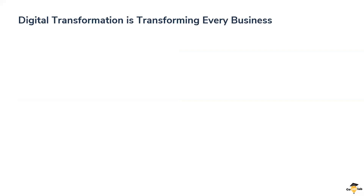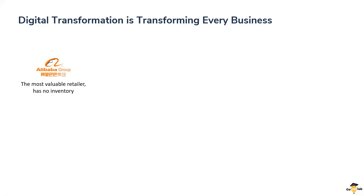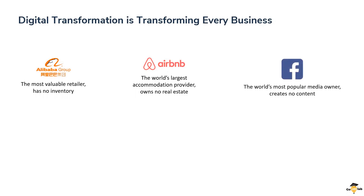Digital transformation is transforming every business. In this slide I'd like to talk about how businesses have evolved in the past few years. As individual consumers, we are all witnessing how digital businesses are thriving. Look at Alibaba or Amazon — the world's most valuable retailer — but interestingly they don't own any inventory. Look at Airbnb or Oyo — the world's or India's largest accommodation provider — but they don't own any real estate. Look at Facebook, LinkedIn, Twitter, Instagram.